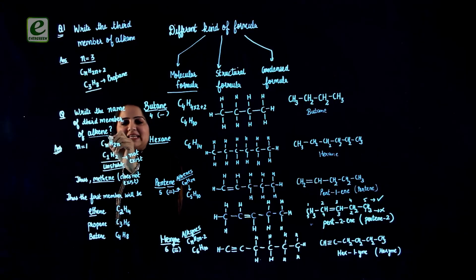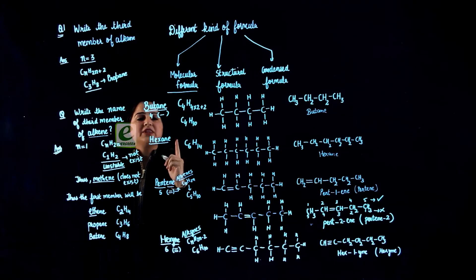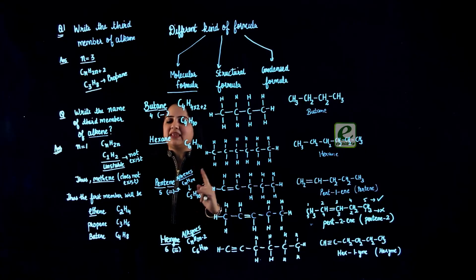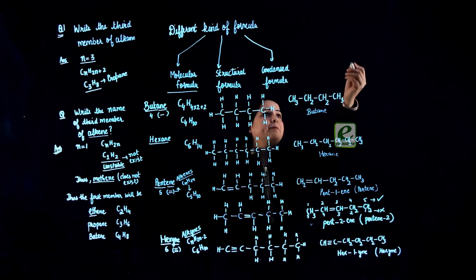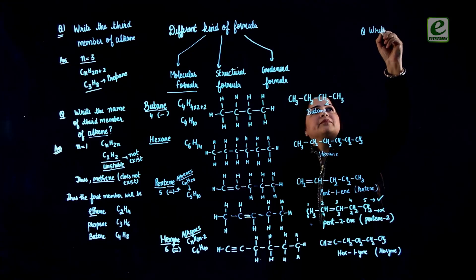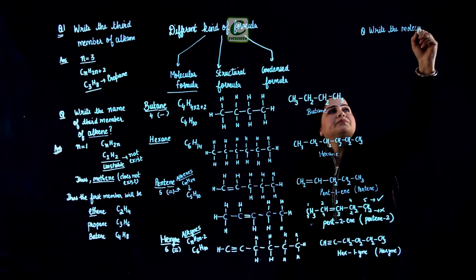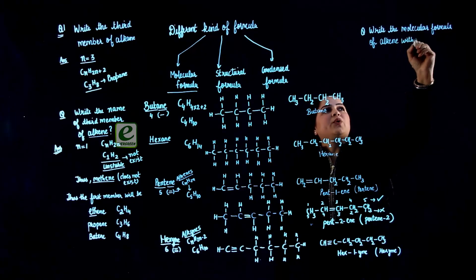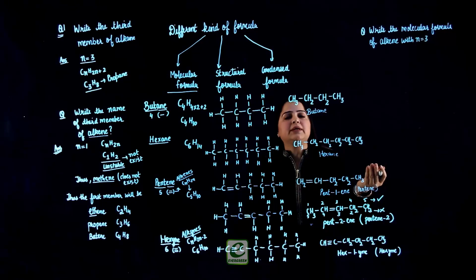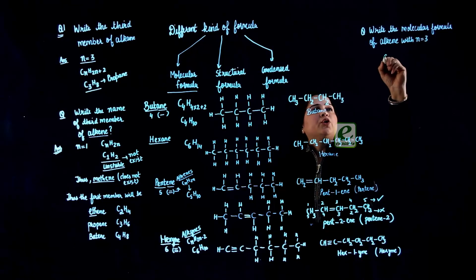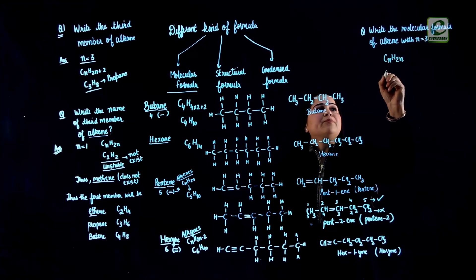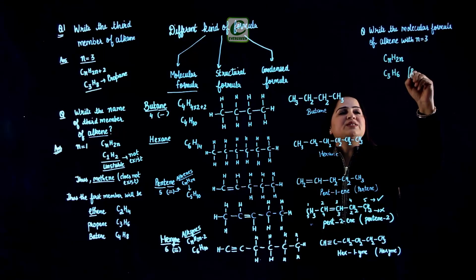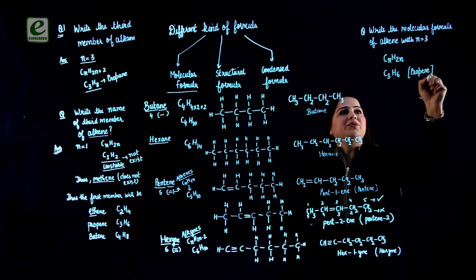We need to know that for both alkene and alkyne, the first member is ethene and ethyne respectively, because methene and methyne do not exist. But if the question asks to write the molecular formula of alkene with N=3, you should not worry about members — simply write CnH2n and put N=3, giving C3H6, which is propene. So the alkene with N=3 is propene, but the third member of alkene is butene.